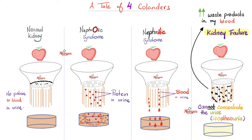A good kidney clears the stuff out. In nephrotic syndrome, you're losing too much protein in the urine. In nephritic syndrome, you're losing blood in the urine. In kidney failure, the waste is piling up in the blood and you're losing salt in the urine. This poor kidney is unable to concentrate or dilute the urine — whether you drink too much water or too little water, the urine doesn't change its osmolality.